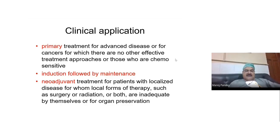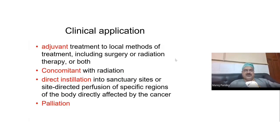Surgery and radiotherapy are local forms of treatment, while chemotherapy is a systemic form of treatment — it is given through the blood and hence goes to every part of the body. Another application is adjuvant chemotherapy, which is given after surgery or radiation therapy or both. There is also concomitant chemoradiation, used to maximize the result of radiation therapy by giving chemotherapy along with radiation.